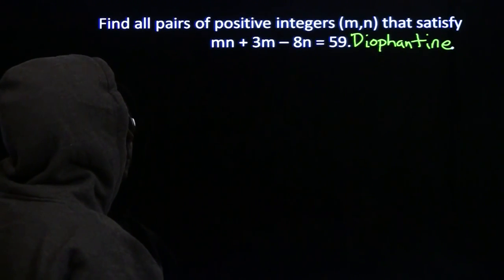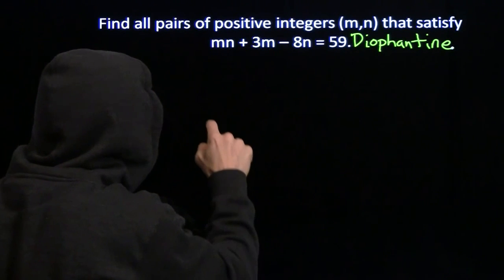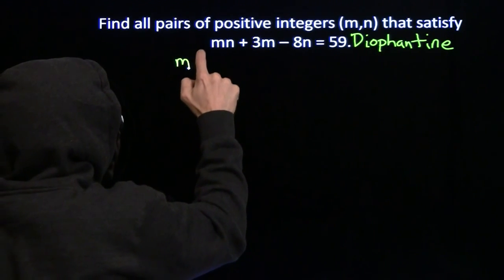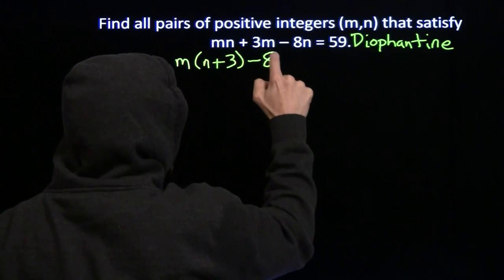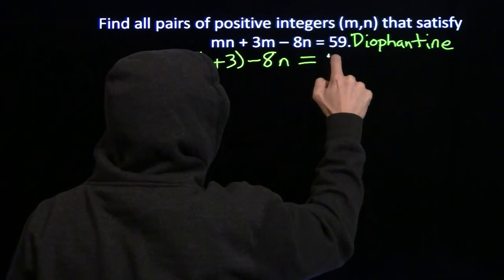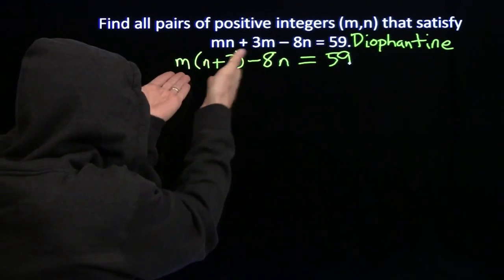Now, where can we factor? Well, I can't factor the whole left side, but I can factor an m out of those first two terms. I have m times (n + 3) minus 8n equals 59. And now it looks like we're stuck. Can't factor anything else right here.